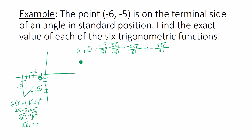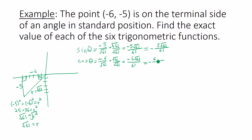Cosine of theta: cosine is adjacent over hypotenuse. The leg adjacent to theta is negative 6, hypotenuse is square root of 61. So we have negative 6 over square root of 61. Rationalize by multiplying by square root of 61 over itself to get negative 6 square root of 61 over 61. Tangent of theta: tangent is opposite over adjacent, so negative 5 over negative 6. The hypotenuse is not used here. That simplifies to positive 5 over 6.